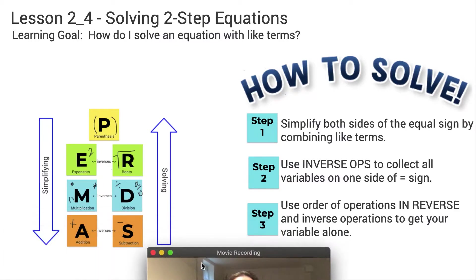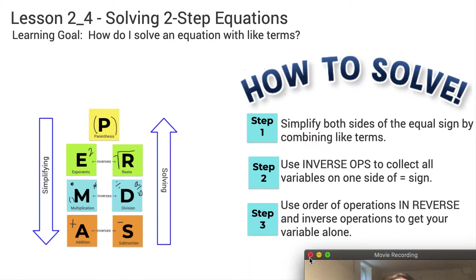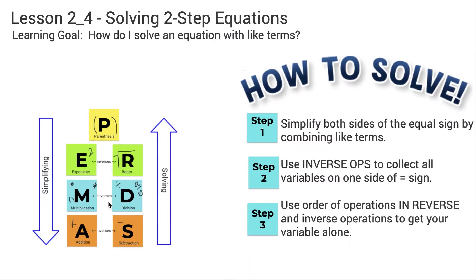Just a reminder that we are still going to be using the order of operations. We're going to be toggling back and forth between simplifying each side of the equation and then solving. As we simplify, we follow the order of operations. As we solve, we use inverse operations and follow the order of operations in reverse.